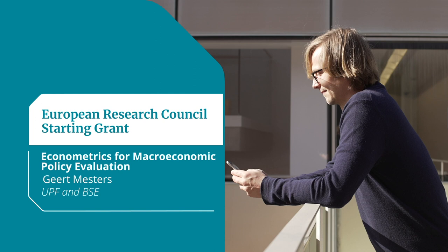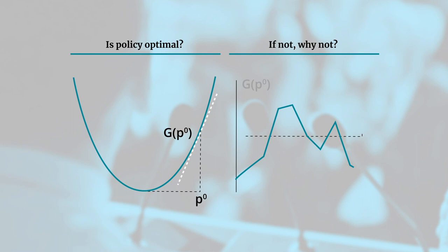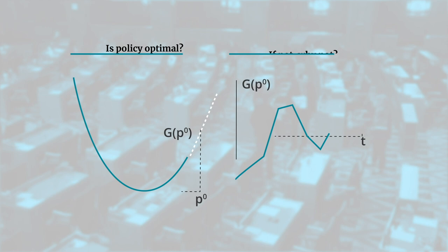I focus on answering two key questions. First, is the proposed macroeconomic policy choice optimal? And second, if I find that it's not optimal, why not? Which variables, shocks, and dynamics were overlooked when setting policy?